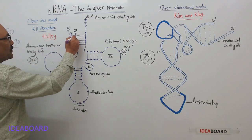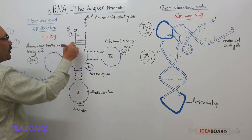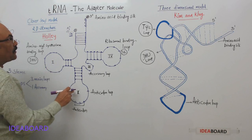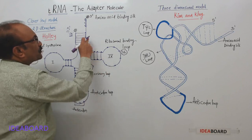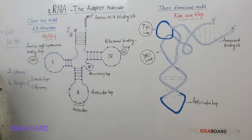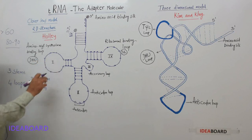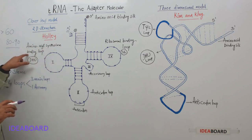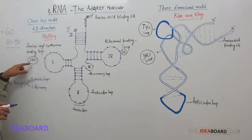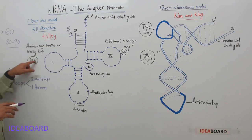Towards the five-prime end, the first loop is present, and opposite to it is the second loop. The first loop recognizes the enzyme called aminoacyl-tRNA synthetase, so it is called the aminoacyl synthetase binding loop, also known as the DHU loop or dihydrouridine loop.